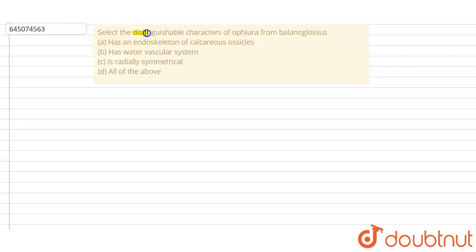Select the distinguishable characters of Ophiura from Balanoglossus. So basically, we have to select the distinguishable characters which are present in Ophiura that are different from Balanoglossus.